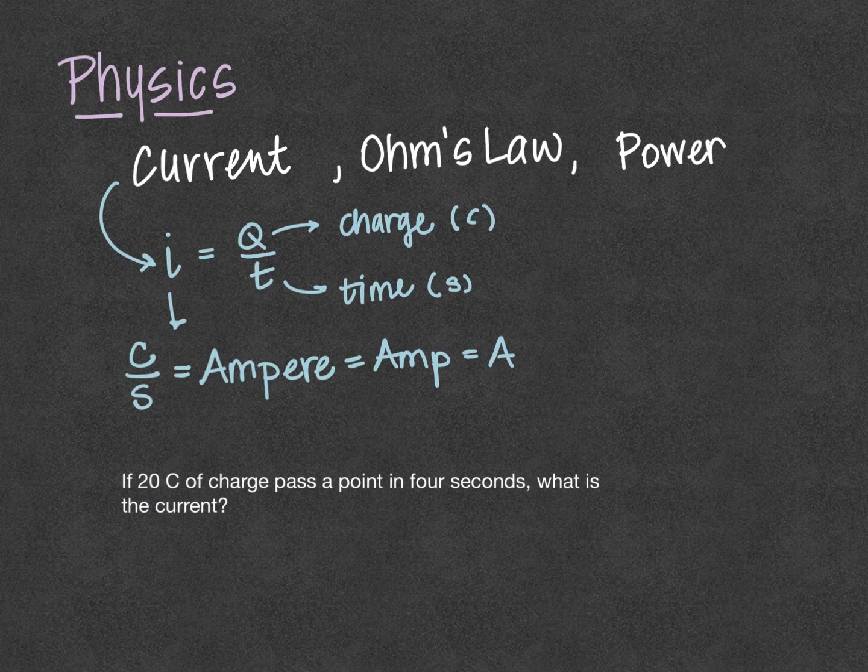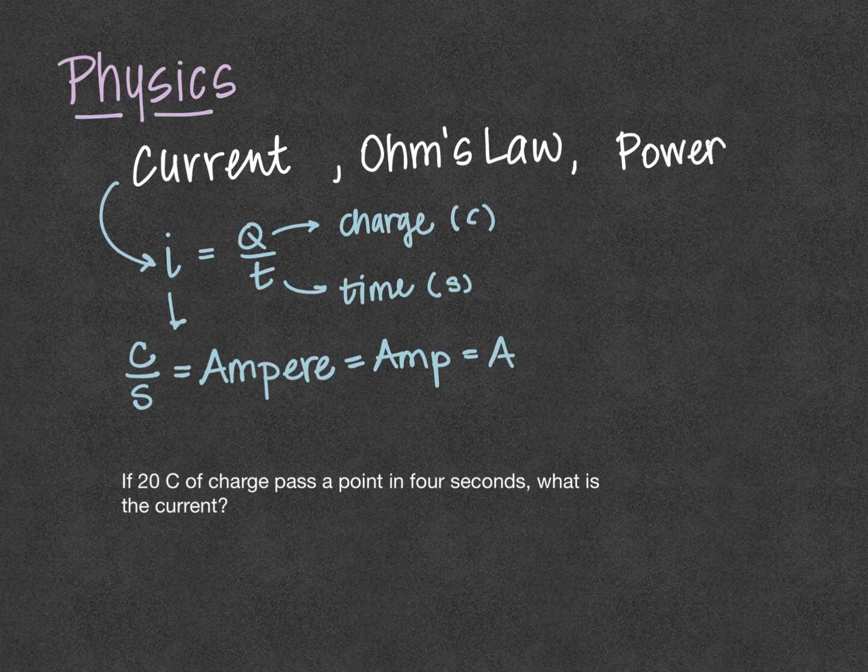Let's look at an example where we have 20 coulombs of charge pass a point in four seconds. What is the current?